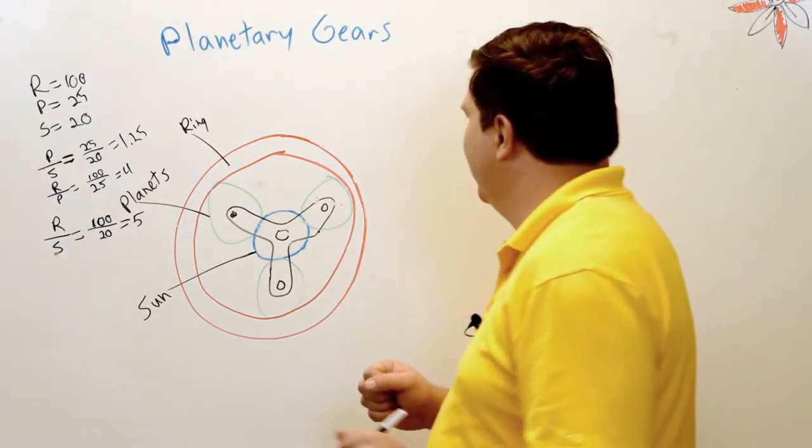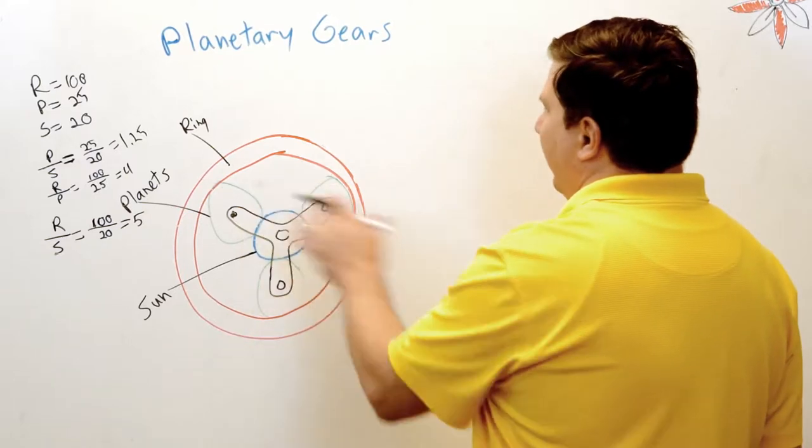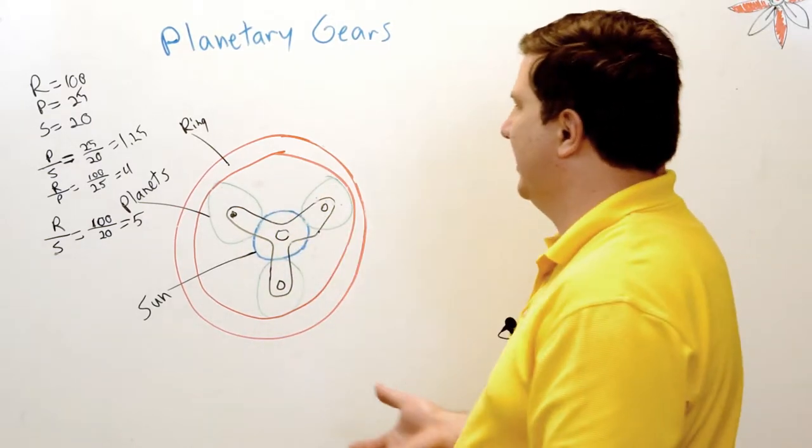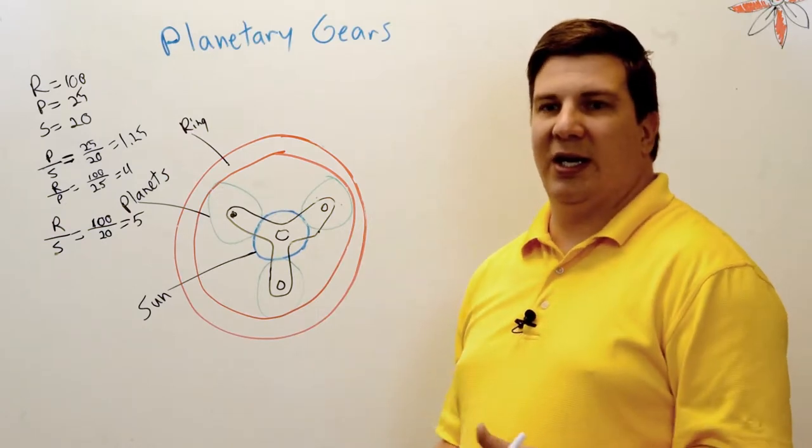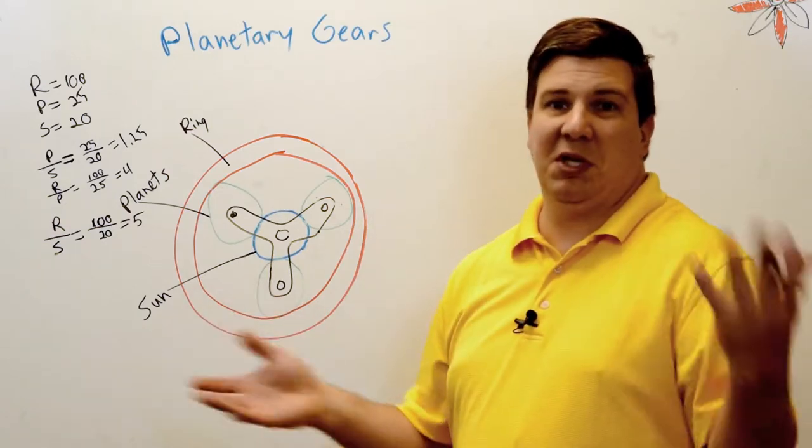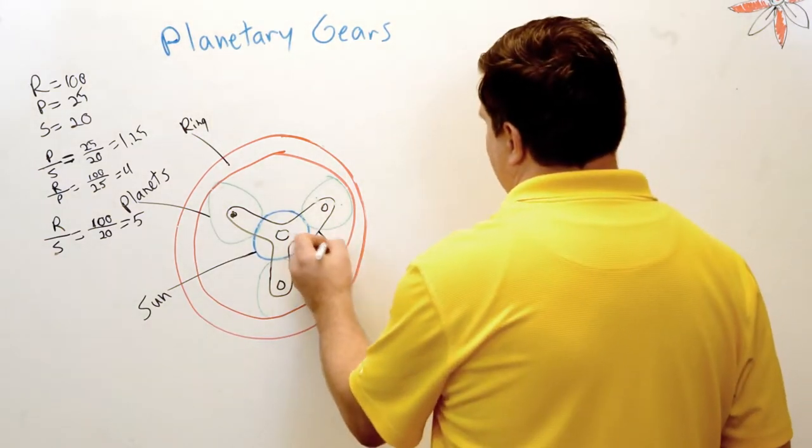The first thing we're gonna do is we're gonna say that something here needs to be fixed. Something is not gonna rotate, because otherwise we just get wonkiness coming out of it. So my first example, I'm gonna say that this is fixed.